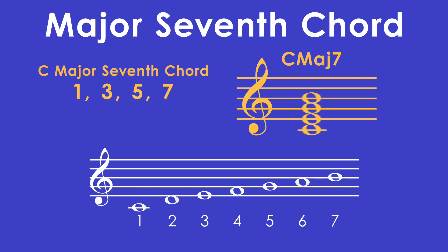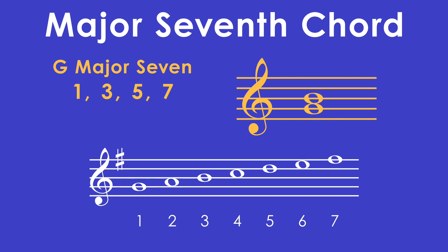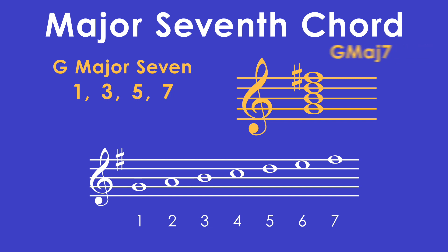Let's do another example of a major seventh chord — this time, G major seven. So G is our root. This also tells us what key signature to use. The key signature of G major is one sharp: F sharp. We'll make sure we put that in the key signature. Now we can fill out the rest of the scale from G to G with our numbered scale degrees. Remember that our major seventh chord uses the 1, 3, 5, and 7 of the scale. One is G natural. Three is B natural. Five is D natural. And seven is F sharp — remember that we have F sharp in our key signature, so don't forget about your key signature when building these chords. So that is our G major seven chord.